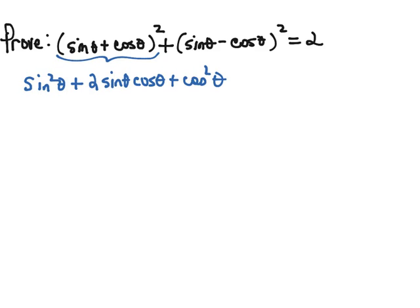Then for our next term, we're going to square out (sine minus cosine) squared. Sine minus cosine times sine minus cosine gives us sine squared minus 2 sine cosine plus cosine squared.